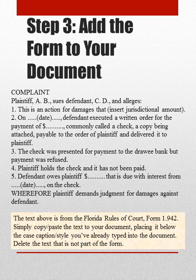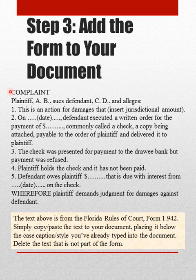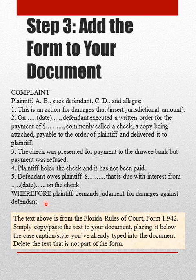Step three is taking that form — Form 1.942 — that you located from the rule book. I literally use my mouse pointer, highlight all the text from the rule book, and copy and paste it directly into my document where it should be placed. You do not want to include any of the notes I pointed out on the previous slide. This will be purely the form itself, not the notes or page numbers that come along with that type of copy and paste.